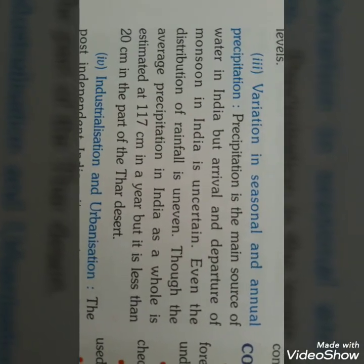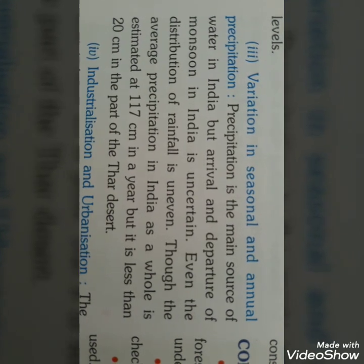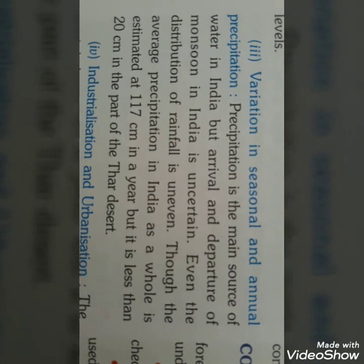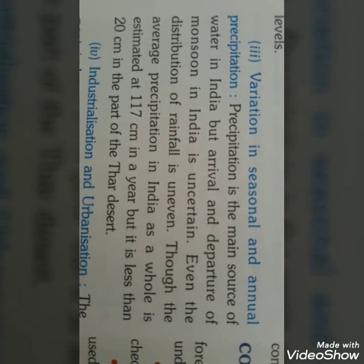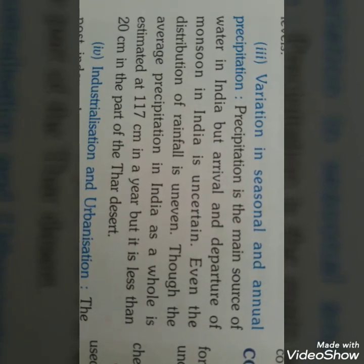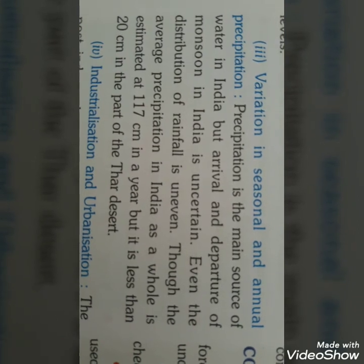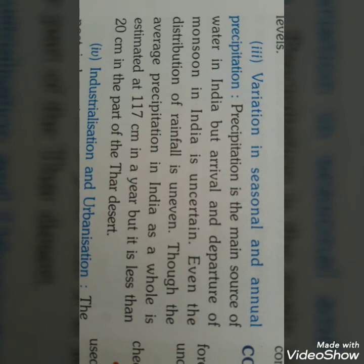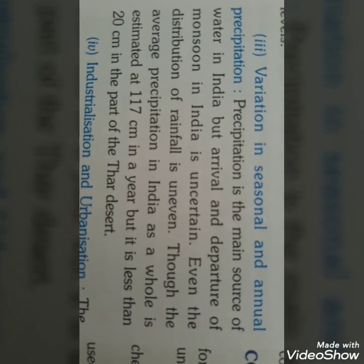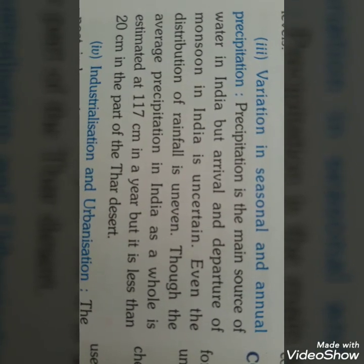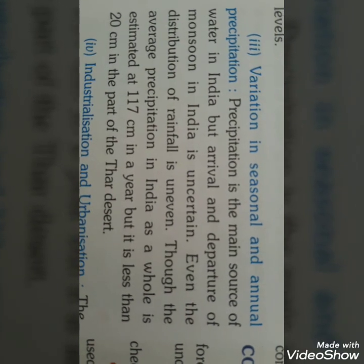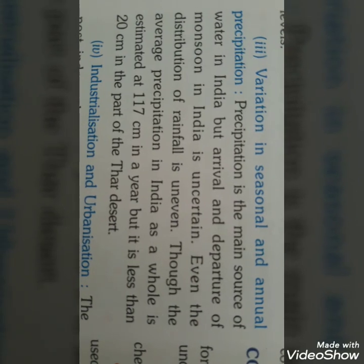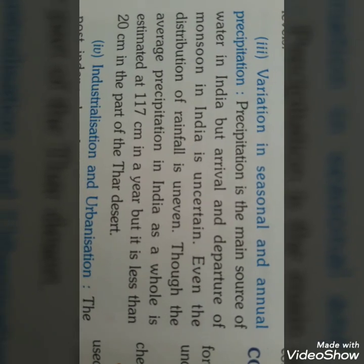Variation in seasonal and annual precipitation — precipitation मतलब पानी का clouds से वापस आना, जो अलग-अलग forms में होता है, but most important is rainfall। Rainfall India में बिलकुल भी certain नहीं है — India का average 117 cm है, but Thar Desert में 20 cm से भी कम है।